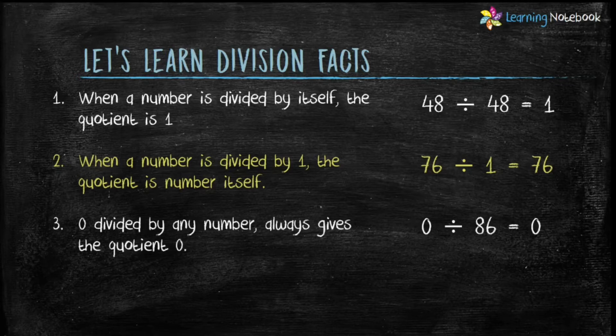Third fact is, 0 divided by any number always gives the quotient 0. Let's divide 0 by 86 — quotient comes out to be 0. Take another example and divide 0 by 7. The quotient would be 0.